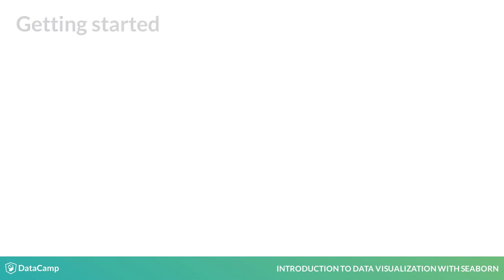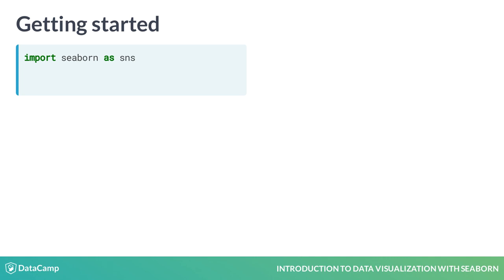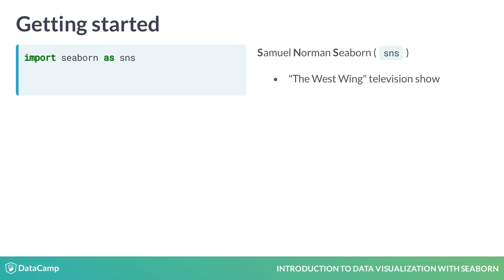To get started, we'll need to import the Seaborn library. The line import seaborn as sns will import Seaborn as the conventionally used alias sns. Why sns? The Seaborn library was apparently named after a character named Samuel Norman Seaborn from the television show The West Wing. Thus, the standard alias is the character's initials, sns.